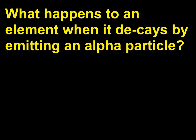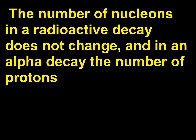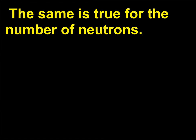What happens to an element when it decays by emitting an alpha particle? The nucleus that results from a radioactive decay is called the daughter. The number of nucleons in a radioactive decay does not change, and in an alpha decay the number of protons of the original must equal the number of protons in the daughter plus the number of protons in the alpha. The same is true for the number of neutrons.